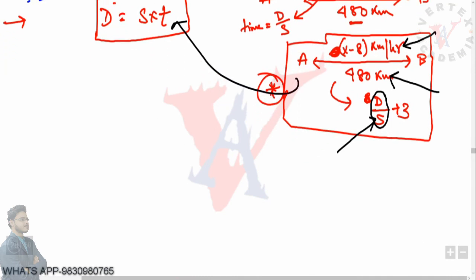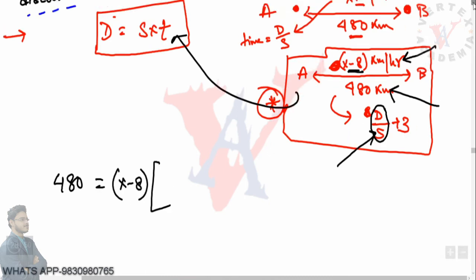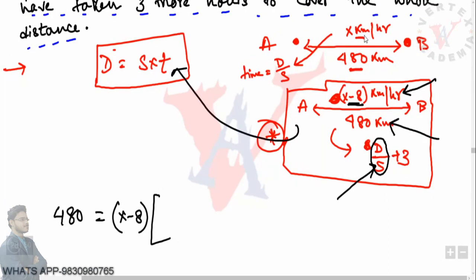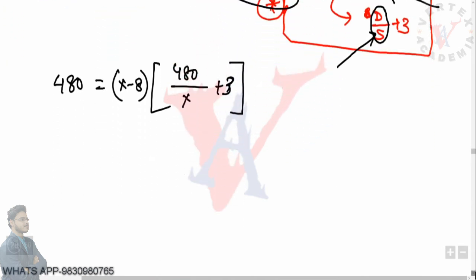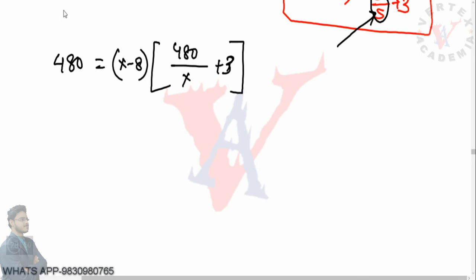Writing it down: distance is 480 kilometers, and distance equals speed into time. The speed in the second case is x minus 8, and the time is 480/x plus 3. So the equation becomes: 480 = (x − 8) × (480/x + 3). We have now framed an equation, and let us proceed to show that it is indeed a quadratic equation, since we are in the quadratic equations chapter.